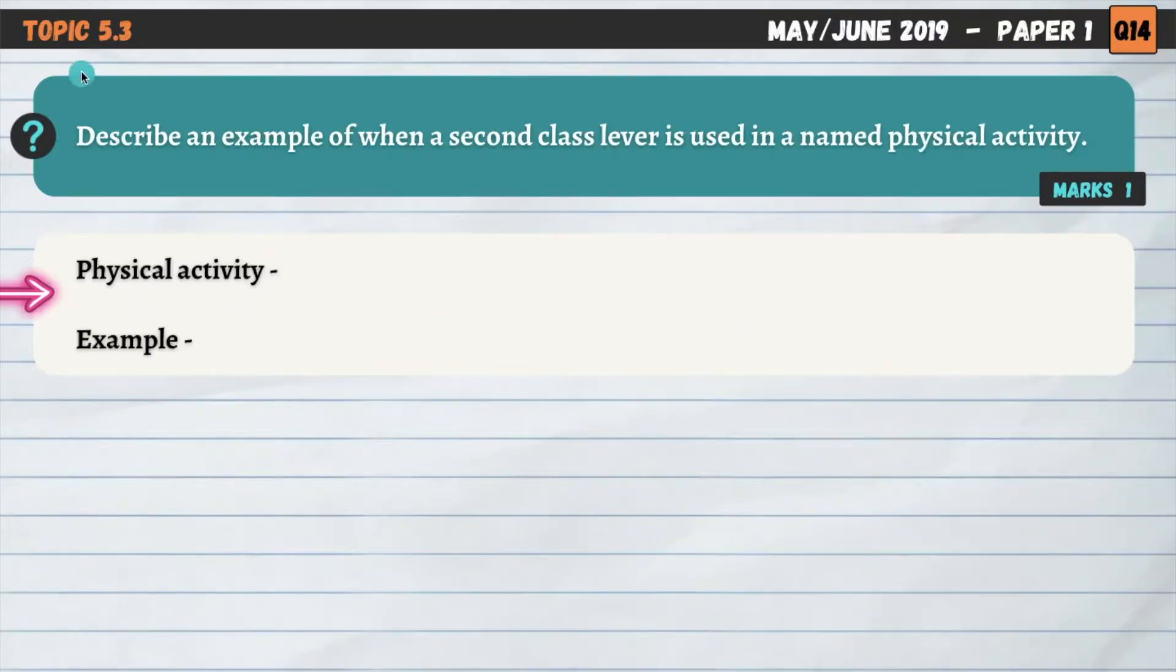Question two, topic 5.3, still on levers. Describe an example of when a second class lever is used in a named physical activity. So this is a question that asks for a named physical activity, and the first thing we need to do here is decide on that physical activity that we're going to choose. So I've gone for high jump in this instance.